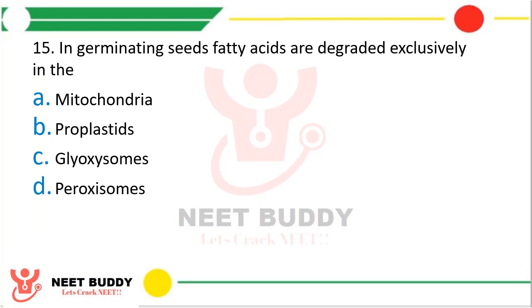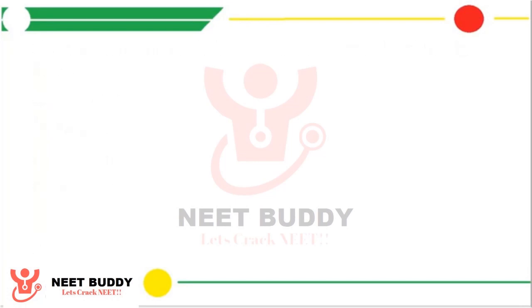Question fifteen. In germinating seeds, fatty acids are degraded exclusively in: mitochondria, proplastids, glyoxysomes, or peroxisomes. The correct answer is option C — glyoxysomes.